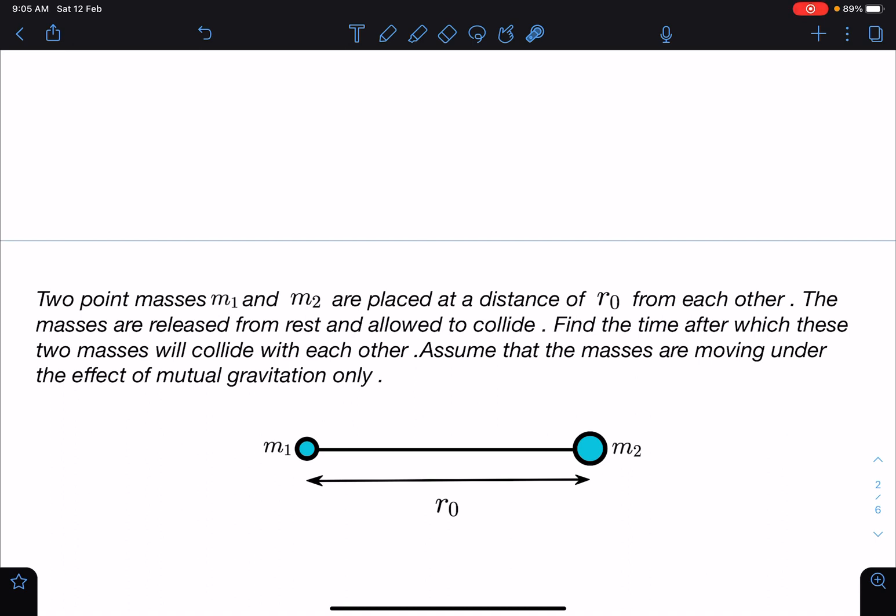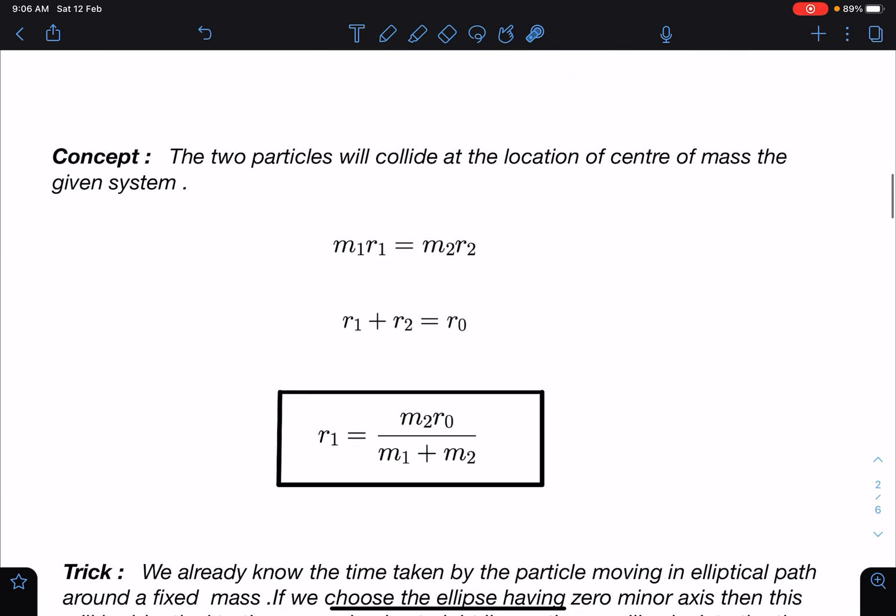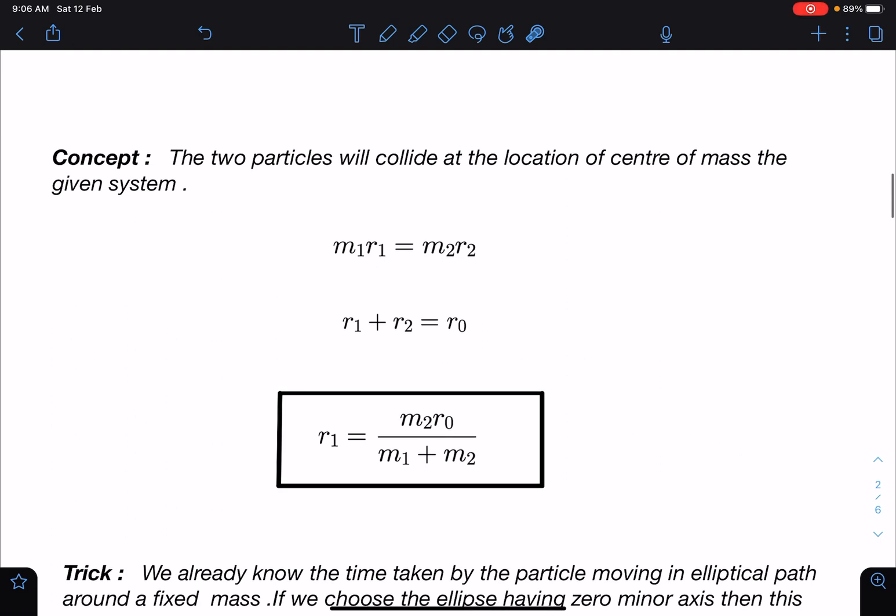So concept-wise we can see these two masses are going to collide at the location of center of mass. This is the first observation we will make. So very easily we can say m1 r1 equals m2 r2, and r1 plus r2 is r0. So from here we will get the value of r1 as m2 r0 by m1 plus m2, or r2 value as m1 r0 by m1 plus m2. Now here the trick part is...